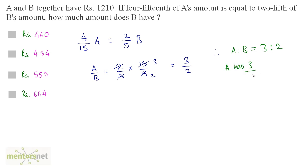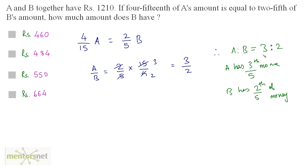A has three out of five parts of the money — three-fifths — and B has two-fifths of the money. The ratio is 3:2, meaning A has three parts and B has two parts. The total number of parts is three plus two, which is five. So out of five parts, B has two parts. Therefore, the amount B has is equal to two-fifths of the total money.